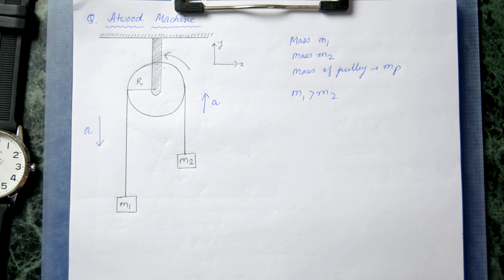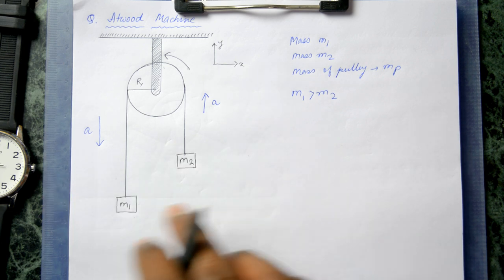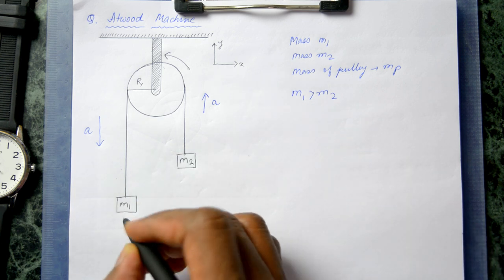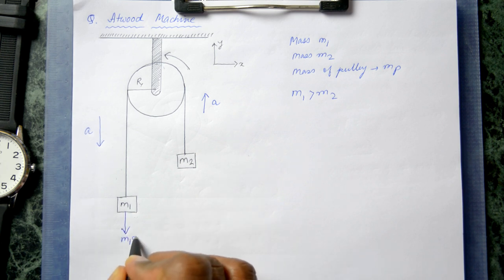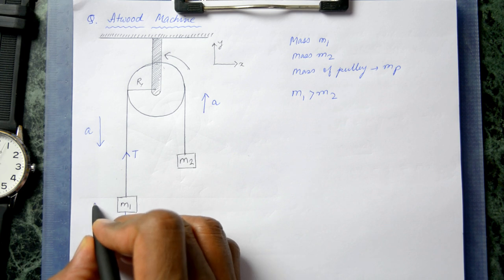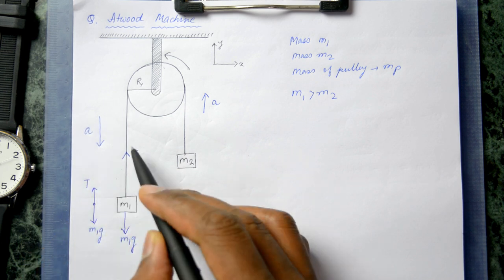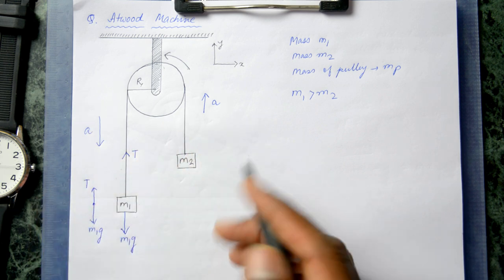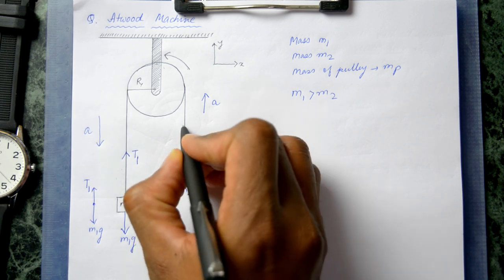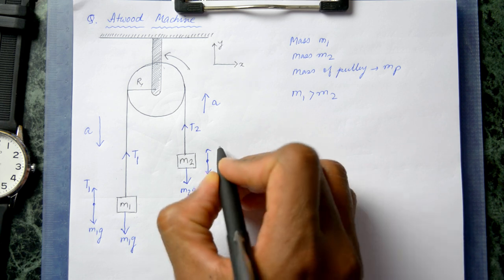Since the string is massless and inextensible, the acceleration on both sides is the same. Our aim is to look at the forces involved and come up with equations of motion. For mass m1, the forces are the weight m1g downward and tension t1 upward. Similarly, for mass m2, the forces are weight m2g downward and tension t2 upward.